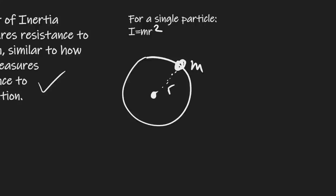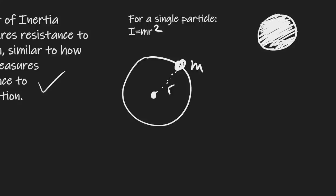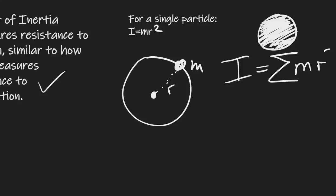If we have more than one particle — because realistically, if we have something like a sphere, this will consist of a lot of different individual particles, in fact a continuum of particles — we need to sum up all of the individual moments of inertia. In that case, the formula just becomes the sum of MR squared.